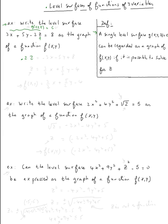How do we solve for z? We have minus 2z, so subtract 3x and 5y from both sides. This gives minus 2z = -3x - 5y + 8. Dividing by negative two: z = (3/2)x + (5/2)y - 4. So we can regard this as f(x, y) = (3/2)x + (5/2)y - 4.